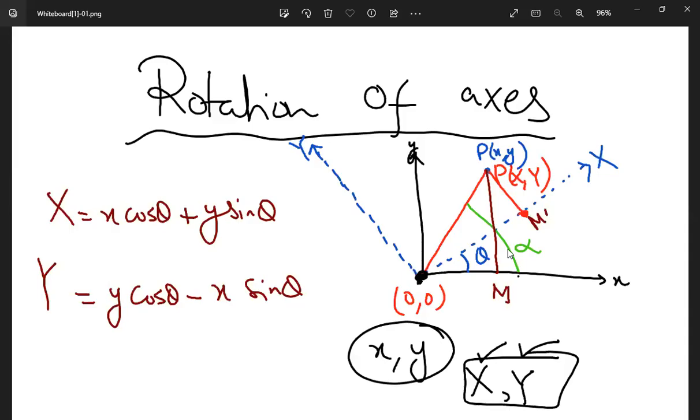In mathematics, a rotation of axes is two-dimensional, means x and y, the horizontal direction and the vertical direction.